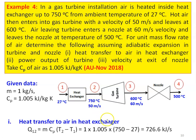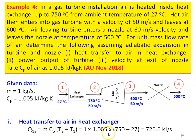First, heat transfer to the air in the heat exchanger: Q₁₂ = M·Cp·ΔT = M·Cp·(T₂ − T₁). With M = 1 kg, Cp = 1.005 kJ/kg·K, T₂ = 750°C, T₁ = 27°C, substituting gives Q₁₂ = 726.6 kJ/s.